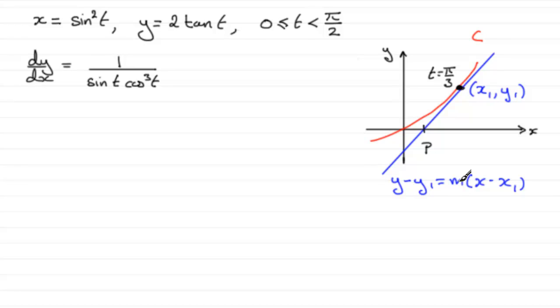And so once we've got the gradient m, x₁, y₁, we should be able to work out what our equation of the tangent is. And we know that at the point P, the y-coordinate would be zero, and we should be able to solve this equation then for x. So hopefully that's given you an outline of how we're going to tackle this problem. You might even want to pause the video at this stage and have a go.